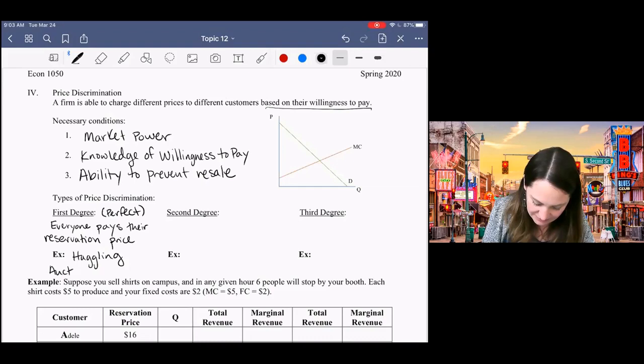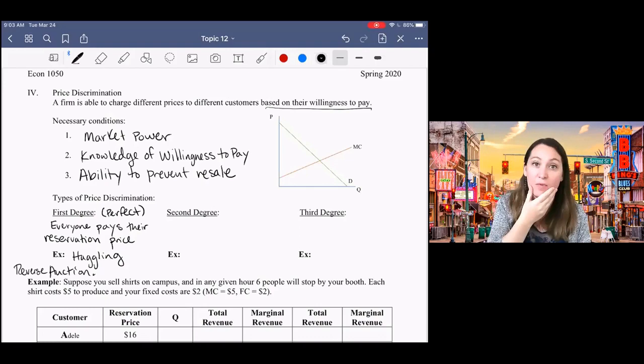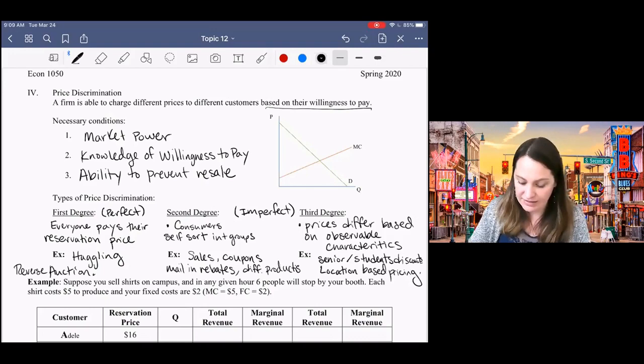Another example of this is a reverse auction, sometimes called the Dutch auction, where the auctioneer, instead of bidding the price up, starts at a really high price. The first person to raise their hand and say yes I'll pay it wins the auction. And that would also elicit the highest willingness to pay.